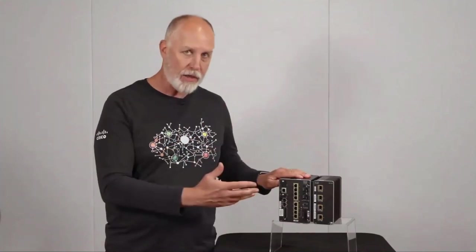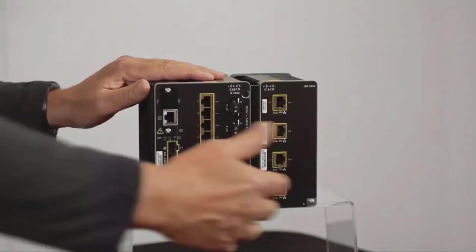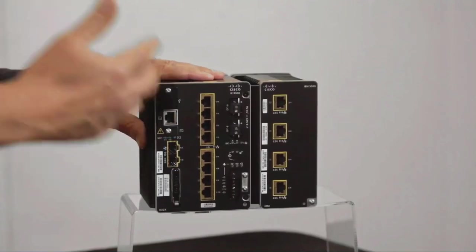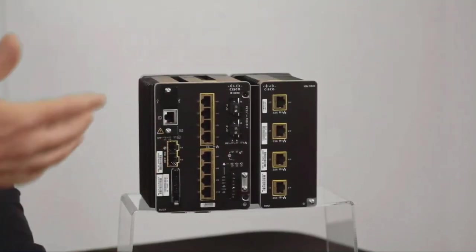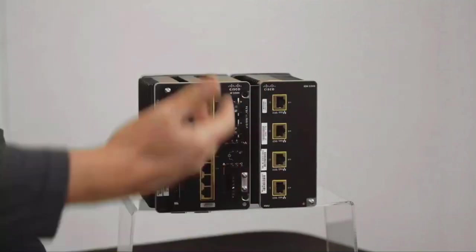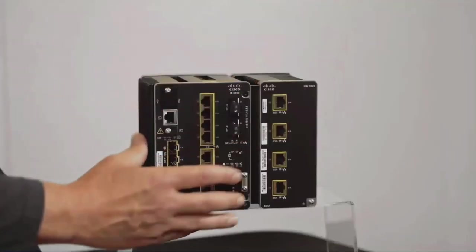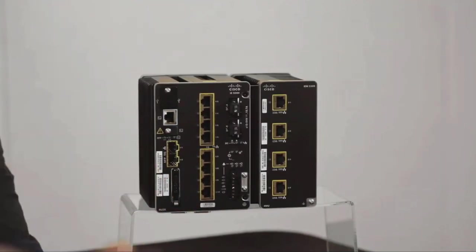This is another IE3300 catalyst series that we're introducing. So it's a 3300, supports expansion modules. It's got the two times 10 gig here. This is the 8U2X. And the significant thing about this one, it's got more POE. So all these eight ports here are POE capable, UPOE capable rather, 60 watts per port. The base system that you see supports up to 240 watts of POE budget by itself.